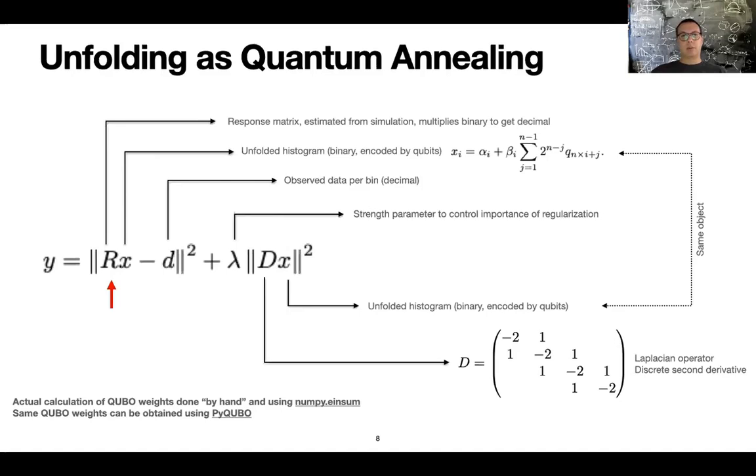The response matrix in this case is a square matrix, as we've seen before, and basically multiplies a binary number to get a decimal number. And this product R times x has to be compared to the vector of real data and you want to minimize this distance. So the difference between these two numbers. And finally, the smoothness is given by the square of the second derivative of the solution. So this is basically done by multiplying the x vector by the Laplacian operator. That is a representation of the discrete second derivative.